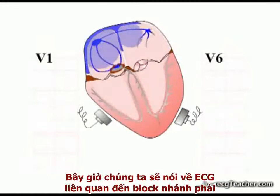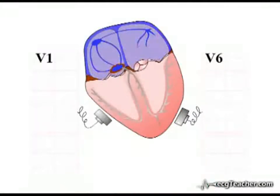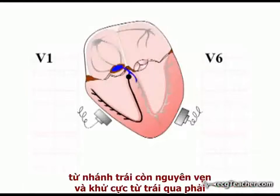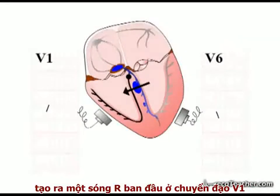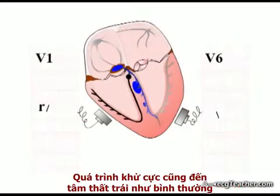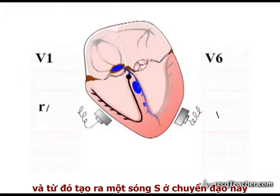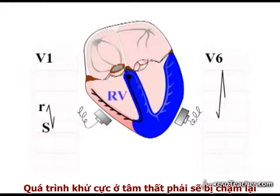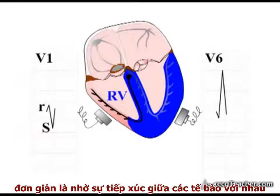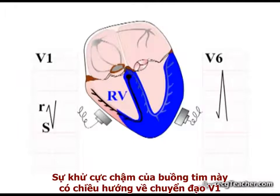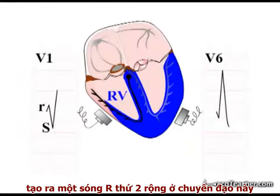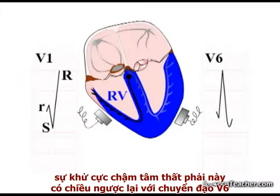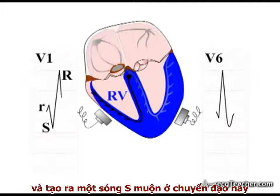We will now deal with the ECG findings associated with right bundle branch block. When conduction in the right bundle branch is blocked, septal depolarisation proceeds as normal from the intact left branch from left to right, producing an initial R wave in lead V1. Depolarisation arriving as normal in the left ventricle then generates an S wave in this lead. In the presence of right bundle branch block, depolarisation of the right ventricle is delayed and travels to the chamber by direct cell-to-cell contacts. Slow depolarisation of this chamber moving towards V1 produces a wide second R wave in this lead. This delayed right ventricular depolarisation moving away from lead V6 produces a late slurred S wave in this lead.